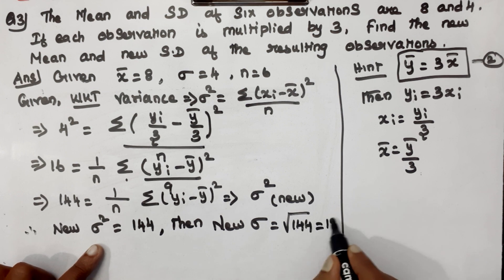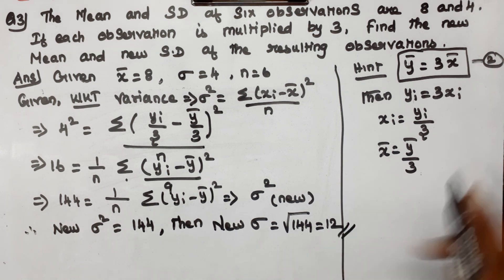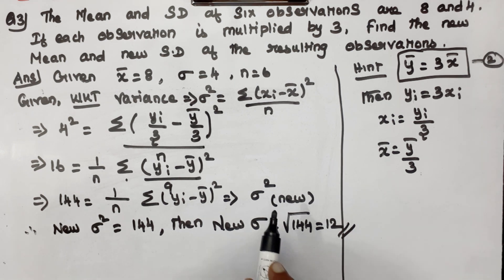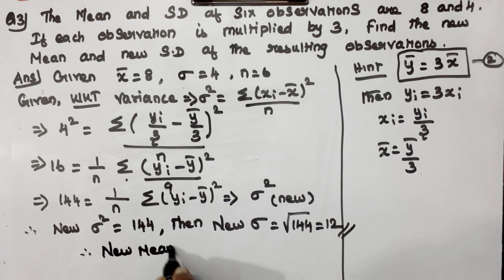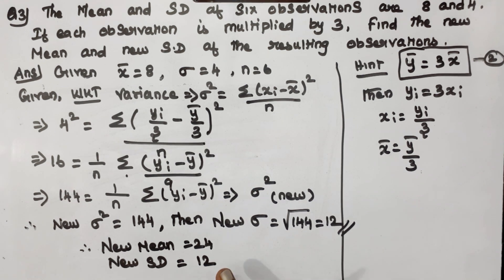Taking the square root of 144 gives 12. So the new standard deviation is 12, and the new mean is 24. Therefore, new mean equals 24 and new standard deviation equals 12. This is the answer for question number 3.